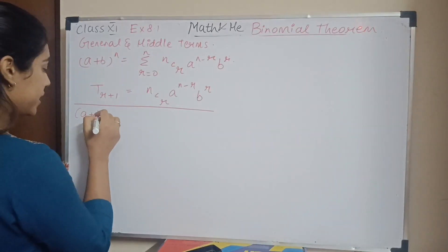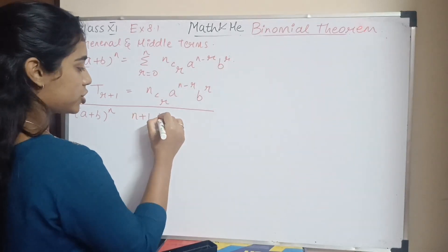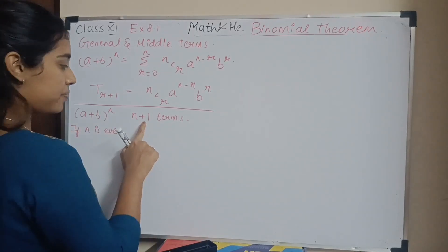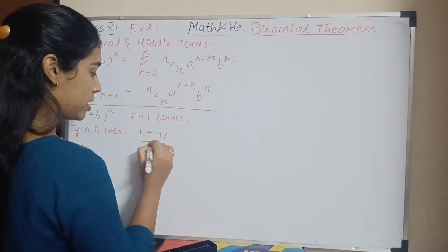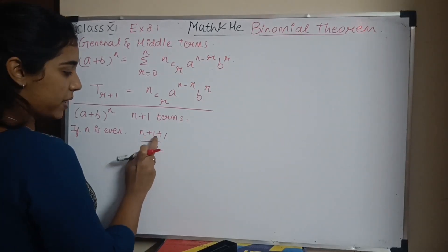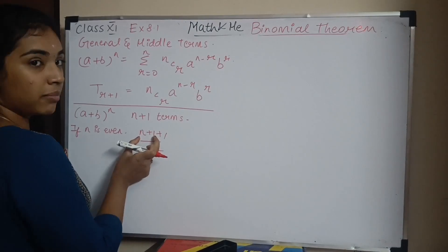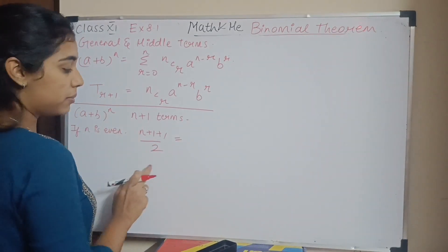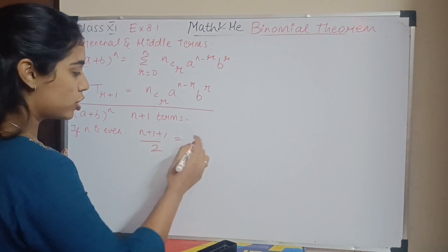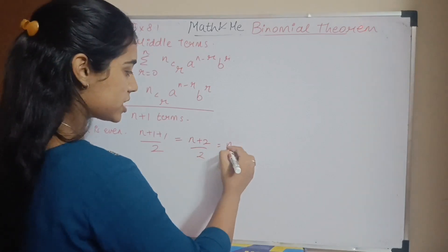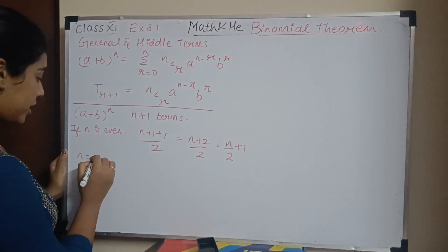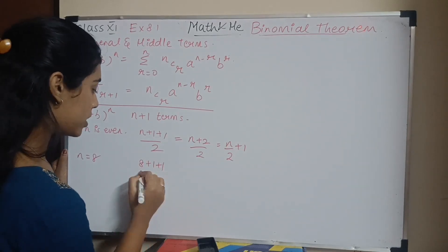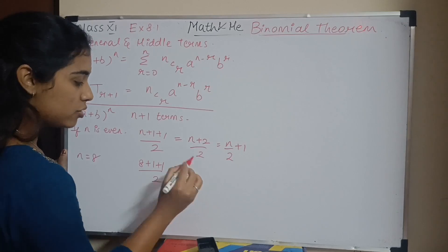For (a + b)^n, the number of terms is n+1. If n is even, the number of terms n+1 is odd, so there is one middle term. The middle term number is (n+1+1)/2 = (n+2)/2 = n/2 + 1. For example, if n is 8, the middle term is (8+1+1)/2 = 10/2 = 5, so the fifth term is the middle term.